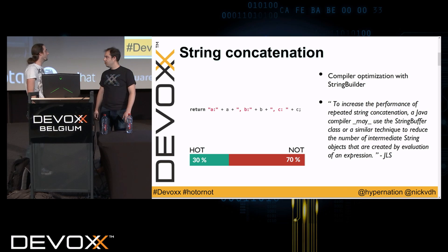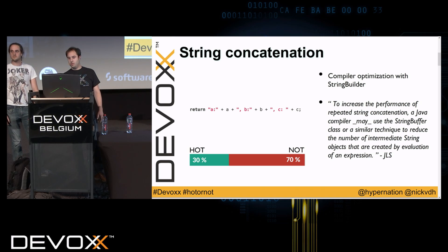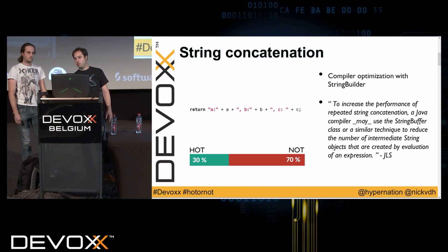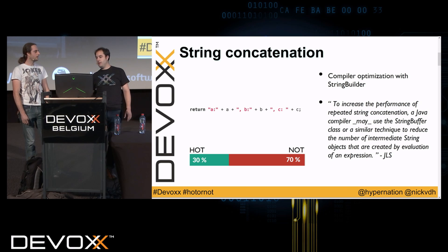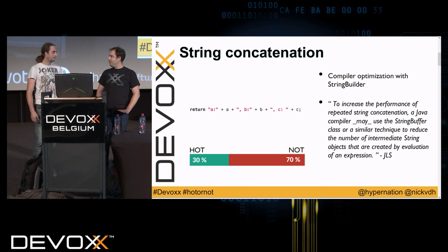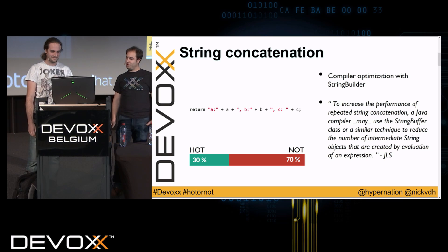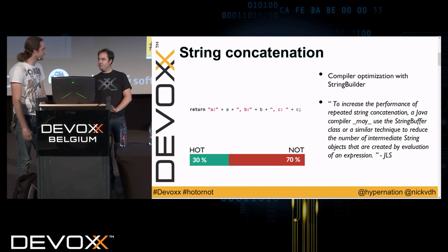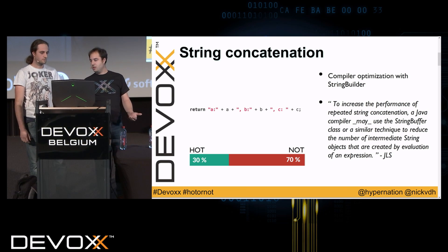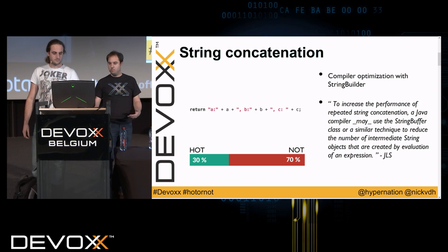Nowadays, this shouldn't be a problem anymore with a modern compiler. If you look at the Java language specification, it says: 'To increase the performance of repeated string concatenation, a Java compiler may use the StringBuffer class or a similar technique to reduce the number of intermediate String objects.' But it says 'may use' — so maybe we should do it ourselves. Well, I don't think so. I trust the compiler a little bit more than I trust my own code. So I think we should just leave it to the compiler. Maybe people just don't like it because in the old days it was an anti-pattern, or they prefer the String.format convention.